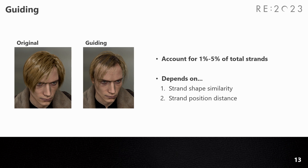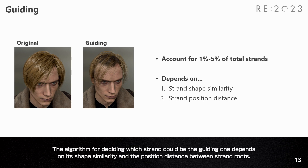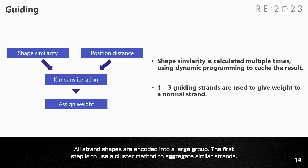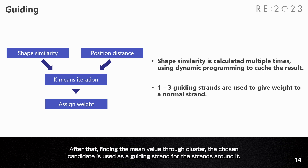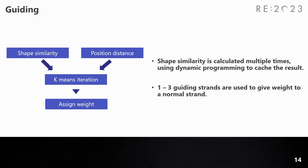About guiding interpolation: for improving performance, only 1% to 5% of the strand budget is used through simulation, which is called the guiding strand. The algorithm for deciding which strand is a guiding strand depends on shape similarity and position distance between strand roots. All strand shapes are encoded into a large group. A cluster method aggregates similar strands, then the mean value within each cluster is found. The chosen candidate is used as the guiding strand, and other strands are assigned weights from 1 to 3 guiding strands.